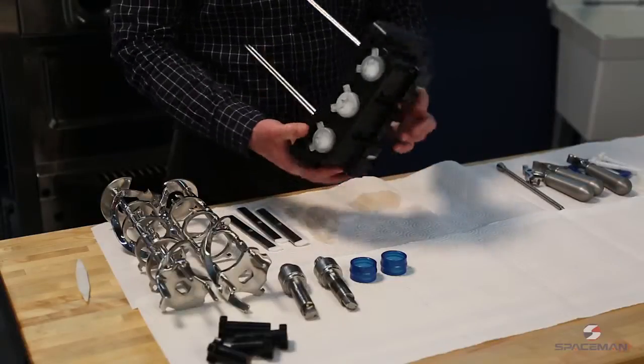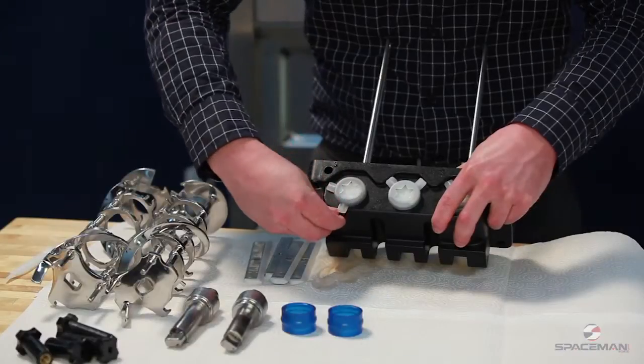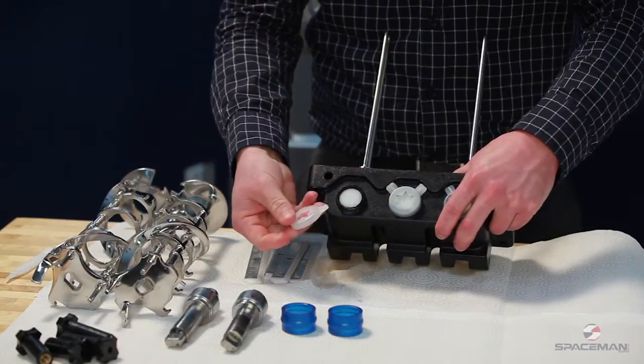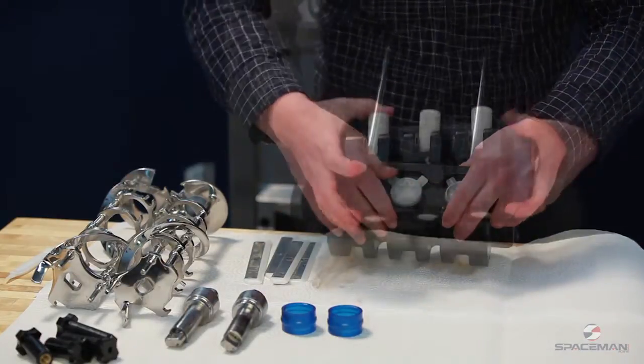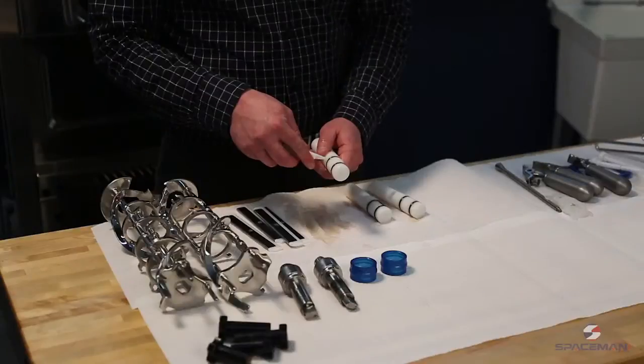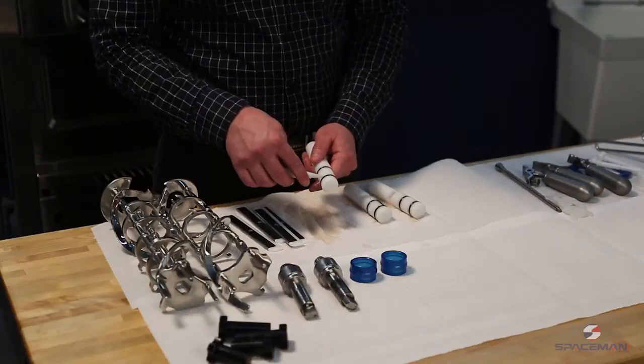Flip the discharge door over. Move the tabs so that you can grab them and pull off the star caps. Push out the valve bodies. Grab your O-ring tool and remove the O-rings.